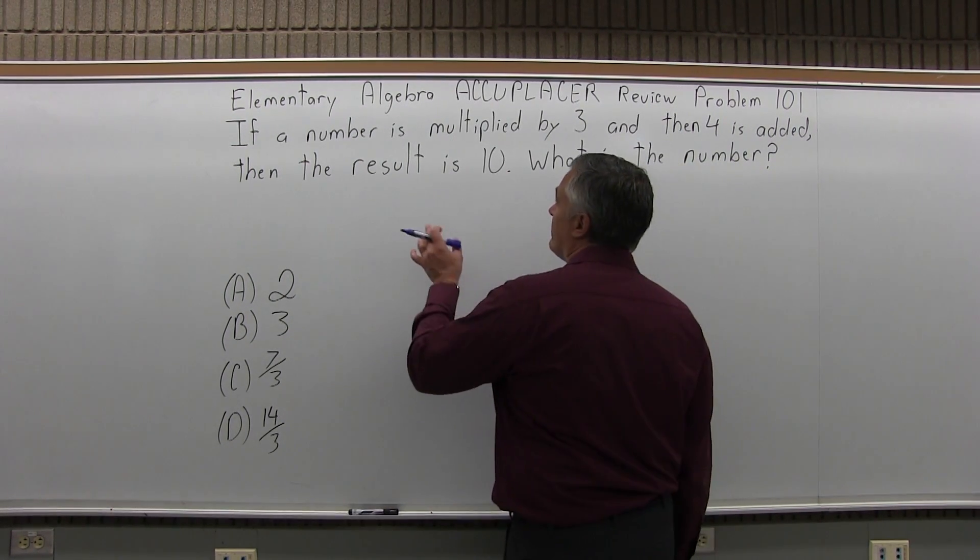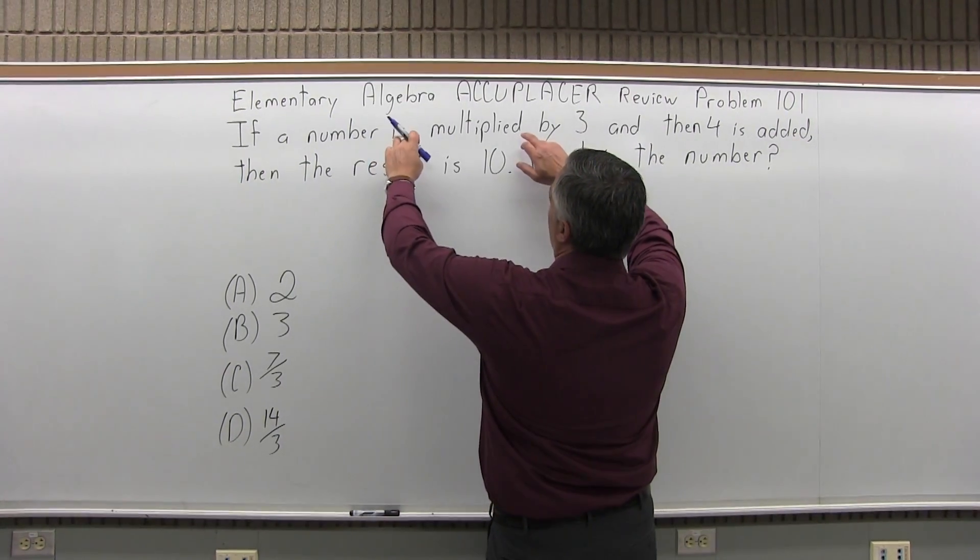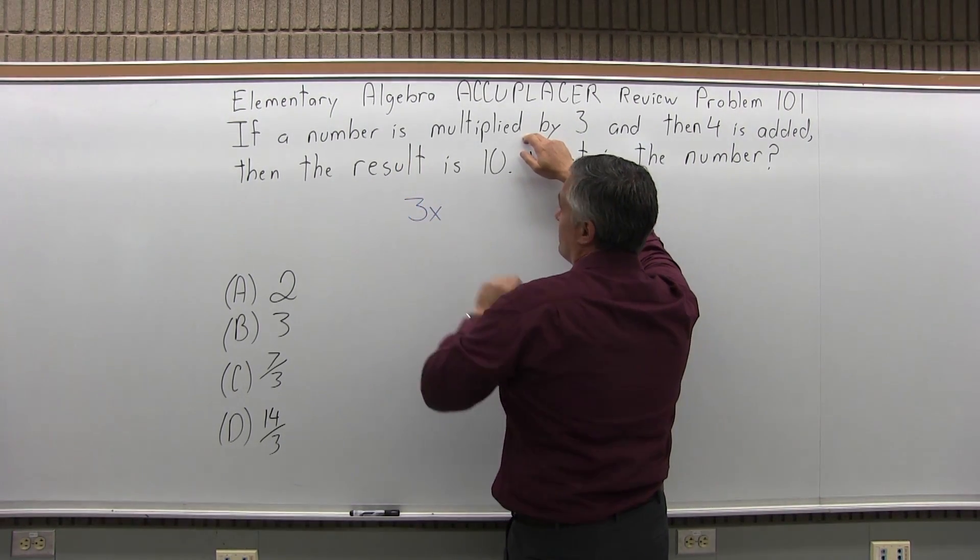We have to first turn this sentence into an equation and then we solve it. So if a number is multiplied by 3, let's start with that. A number multiplied by 3 can be written 3x.